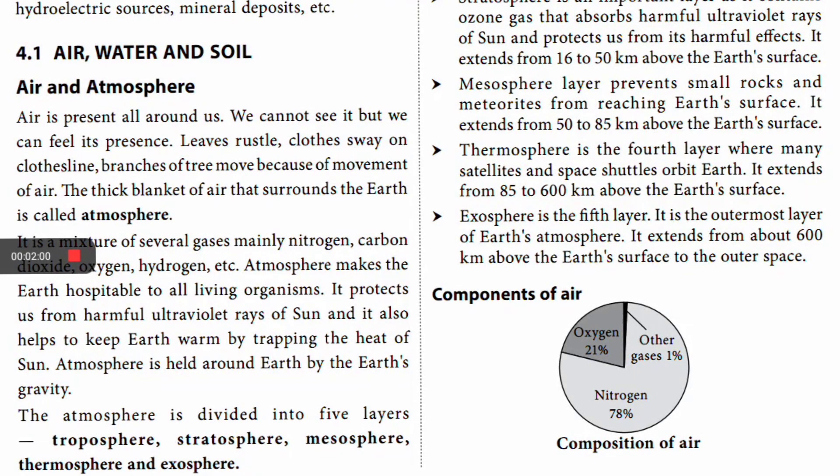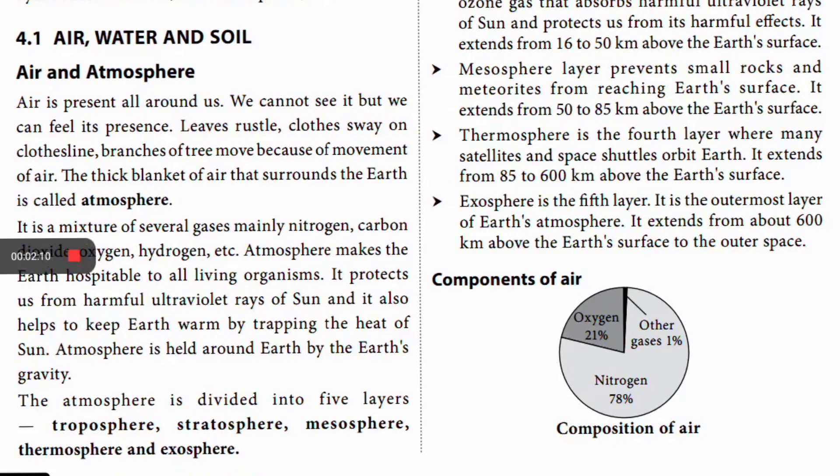Air is present all around us. We cannot see it, but we can feel it — leaves rustle, and branches of trees move because of the movement of air. The thick blanket of air that surrounds the earth is called the atmosphere. It is a mixture of several gases, mainly nitrogen, carbon dioxide, oxygen, hydrogen, etc. The atmosphere makes the earth hospitable for all living organisms. It protects us from harmful ultraviolet rays of the sun and helps keep the earth warm by trapping the heat of the sun. The atmosphere is held around the earth by earth's gravity and is divided into 5 layers.